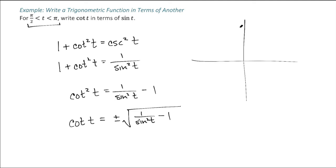So looking at a unit circle, pi over 2 is right here and pi is right here. So we're looking in the second quadrant.